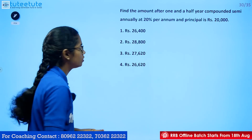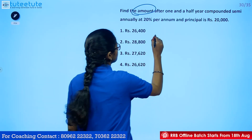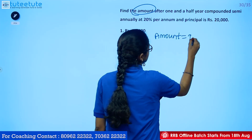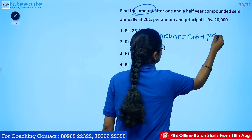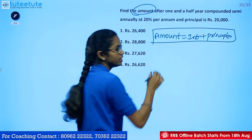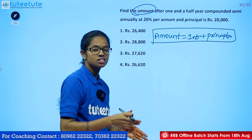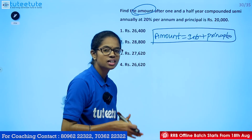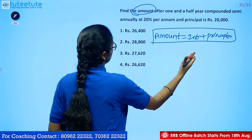So, the amount formula is: amount is equal to interest plus principal.